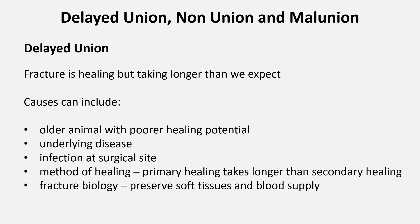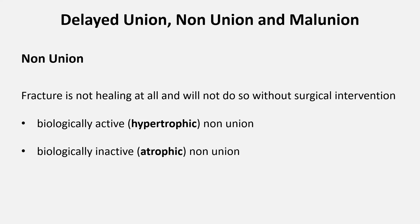Extremely delayed unions and non-unions can be difficult to differentiate from one another, and we rely on serial x-rays taken over many weeks. This is unlikely to be available in our situations, but we will cover the theory regardless. A non-union occurs when the bone has failed to heal and will not do so without further intervention. There are two basic types of non-union: biologically active or hypertrophic non-unions, and biologically inactive or atrophic non-unions.